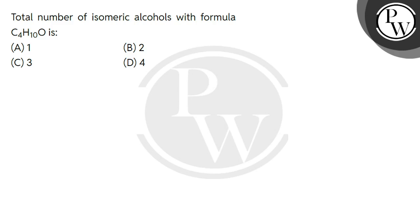Hello students, let's see this question. The question is, the total number of isomeric alcohols with molecular formula C4H10O is. Four options are given.